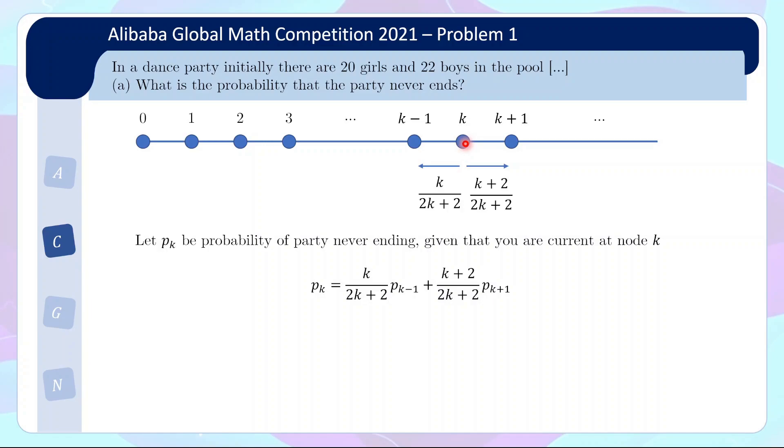So PK, you can condition on the fact that either you go to the left or you go to the right. So if you condition going to the left, then there's this probability of happening, and then you end up with PK minus 1. The other scenario is you have this probability and you end up with PK plus 1. So overall, PK is given by this equation here, where you condition going to the left or going to the right. And so once you have this recurrence relation, I think quite naturally you want to see whether you can solve it for the answer.